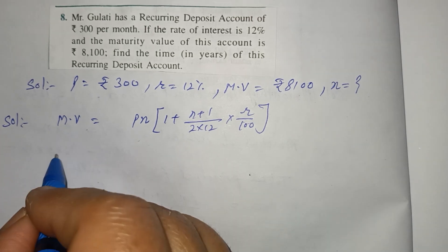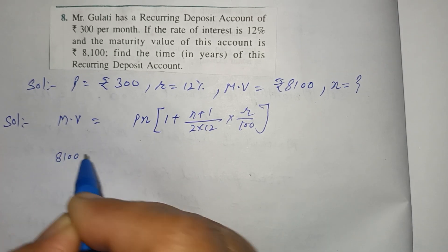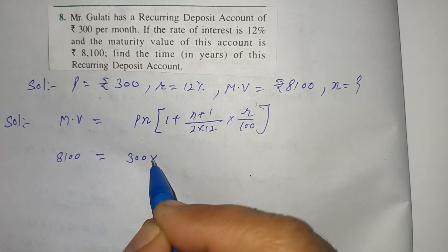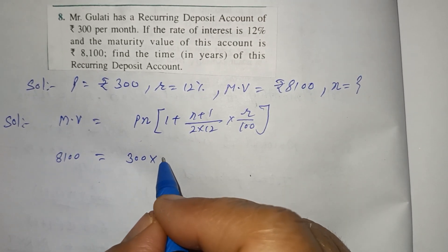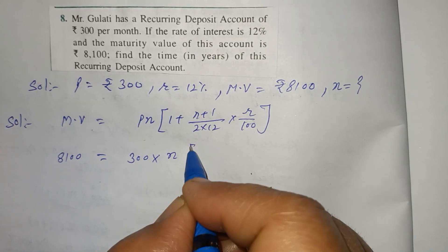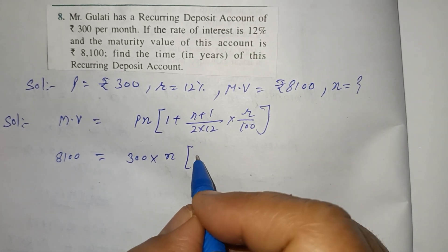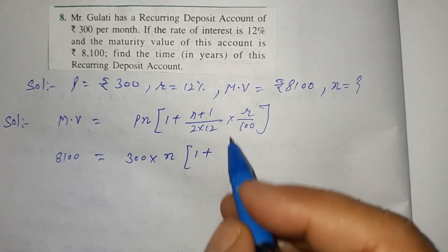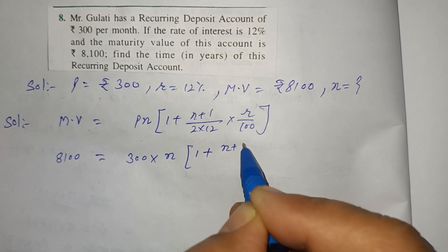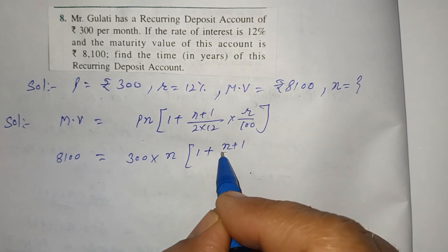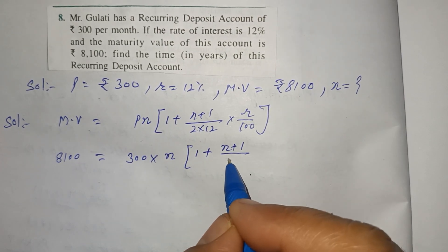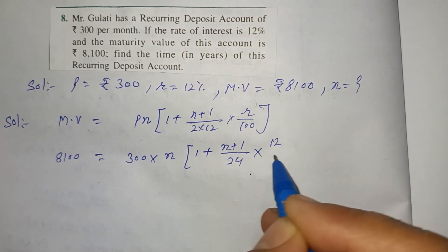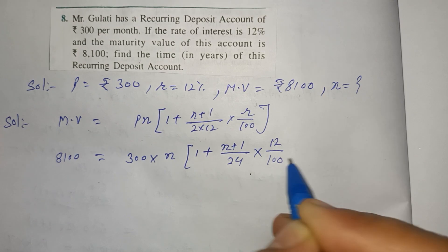Maturity value kitni di rakhi hai? 8100 is equal to P·n substituting values. Two zeros cancel with two zeros, giving us simplified terms.